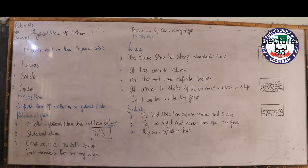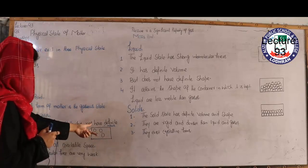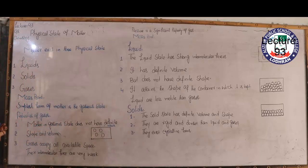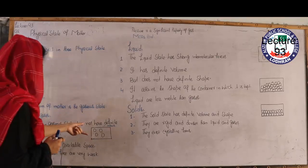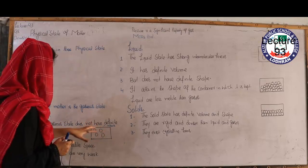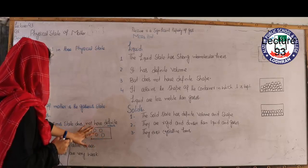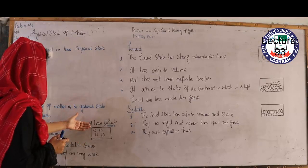Before discussing the properties of gases, I have drawn a cylinder here and this cylinder contains gas molecules — you can consider hydrogen, helium, and oxygen as examples. You will see that the molecules of gases are far away from each other, and among them there are many available spaces.